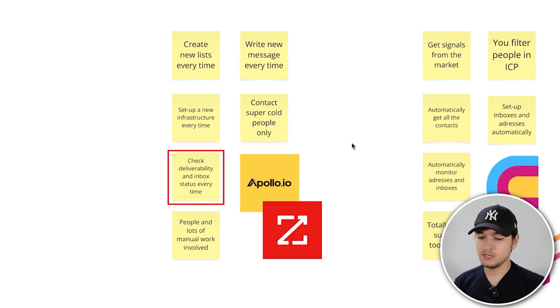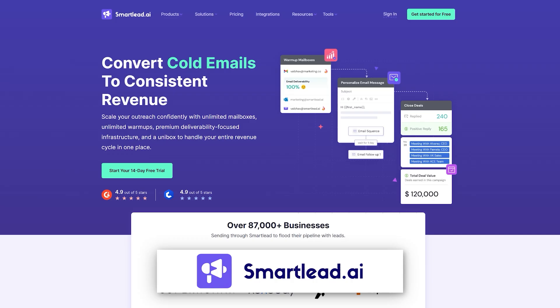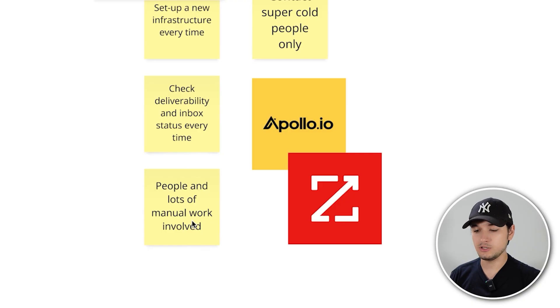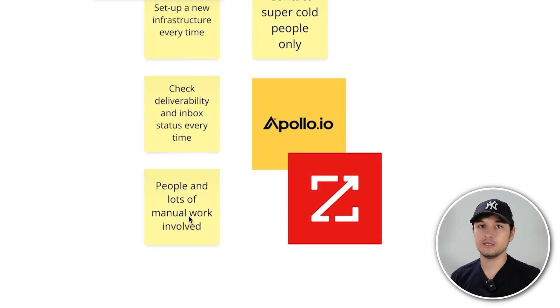You have to check deliverability and bounce status every single time, which is time consuming. You have to get into SmartLead, make sure all the emails are warming up, not getting blocked, and delivering messages into primary inboxes. Usually it involves a lot of manual work which distracts you from actually getting your goals — or you're paying a lot of people to do it and have very bad margins.